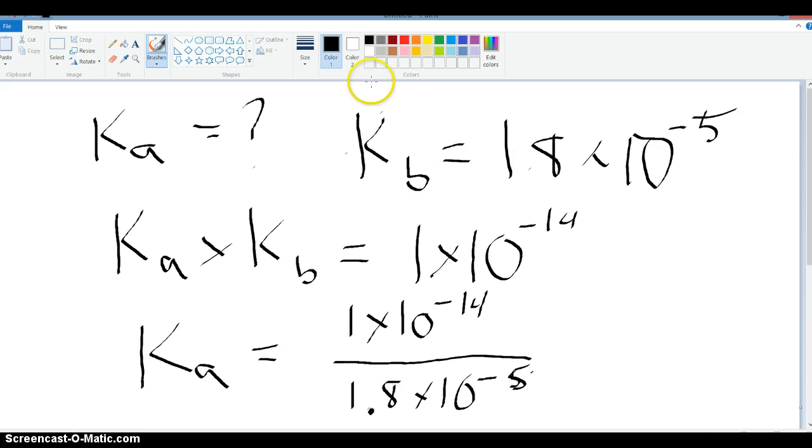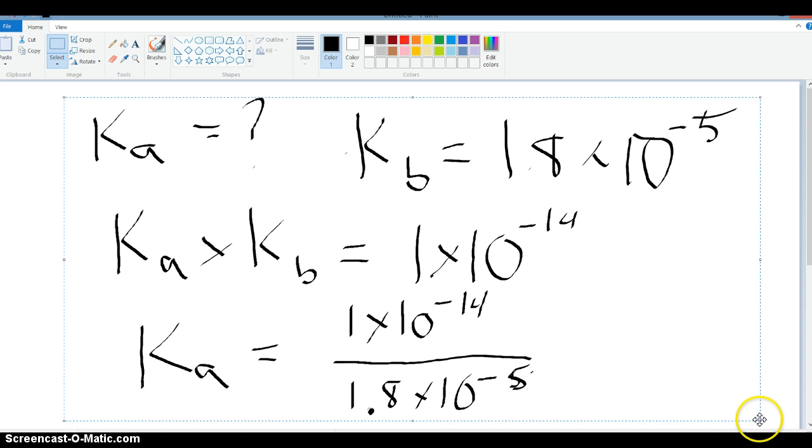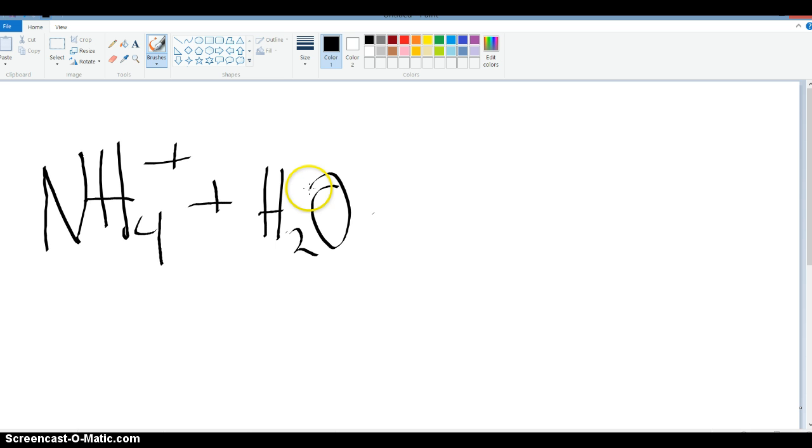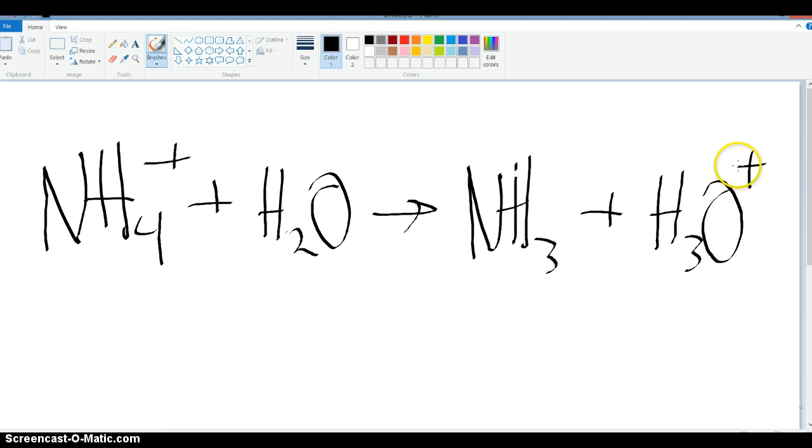And that just comes from the fact that NH3... So if you just look at if I have NH4+ and I react that with water, I'm going to make NH3 and H3O+. So these two things here are conjugate acid-base pairs. So this is the acid, and this is the conjugate base.